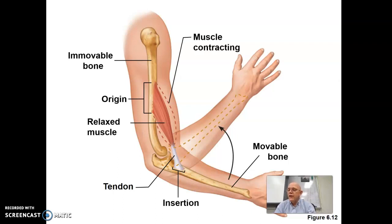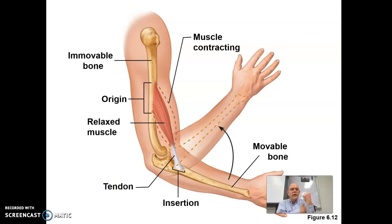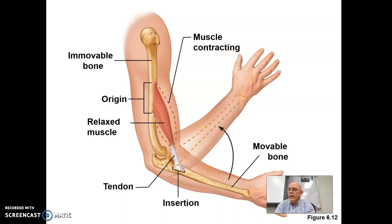Fixators are similar to synergists. Synergists either help the same movement or just keep other undesirable movements from interfering. A fixator actually holds a bone still — they stabilize the origin. While you're bringing your hand up, you also need something to hold your humerus in place so it doesn't go flopping around. So a fixator holds it still and stabilizes it so the bicep can do its work. Synergists are more general: they either assist muscles doing the same movement or prevent undesirable movements like twisting of the hand, but not the actual origin itself.